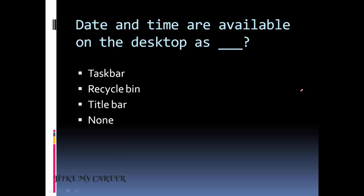Next question. Date and time are available on the desktop as? Option 1: Taskbar. Option 2: Recycle Bin. Option 3: Title Bar. Option 4: None. Answer is Option A: Taskbar.